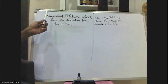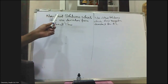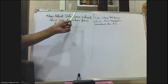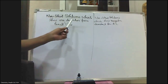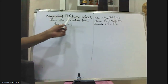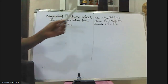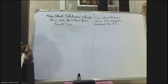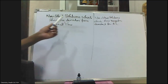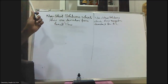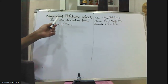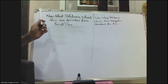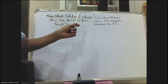Now, what are the characteristics of non-ideal solutions which show negative deviation from Raoult's law? First, what do you mean by positive deviation from Raoult's law, and what do you mean by negative deviation from Raoult's law? We will first discuss the characteristics of non-ideal solutions which show positive deviation.